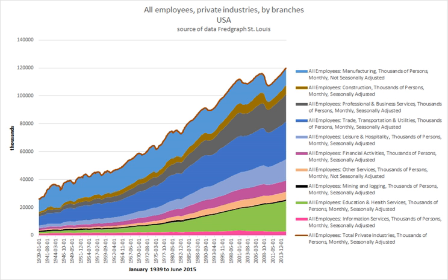Instead there are agreements between employer organizations and trade unions about minimum salaries and other employment conditions. There is a type of employment contract which is common but not regulated in law, and that is hour employment, which can be normal employment, but the work time is unregulated and decided per immediate need basis. The employee is expected to be answering the phone and come to work when needed, e.g. when someone is ill and absent from work. They will receive salary only for actual work time and can in reality be fired for no reason by not being called anymore. This type of contract is common in the public sector.